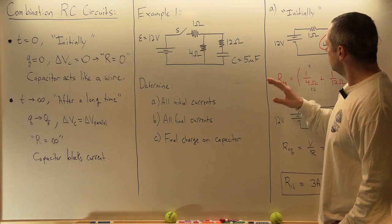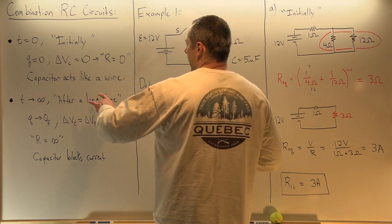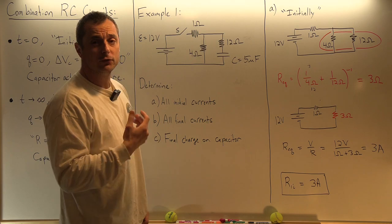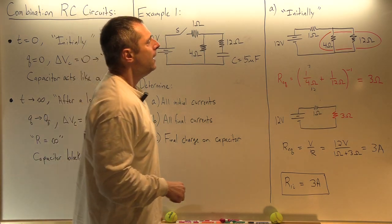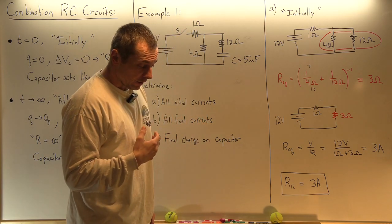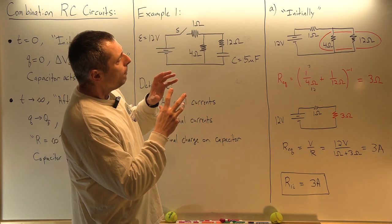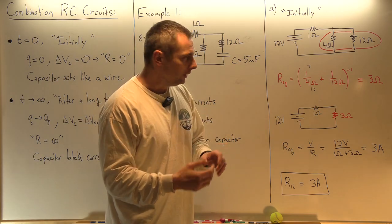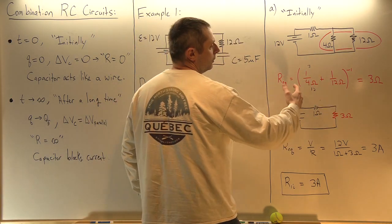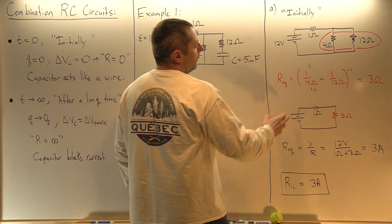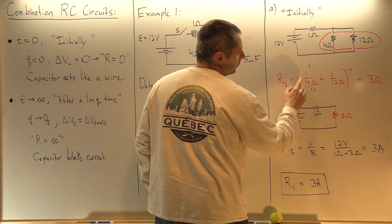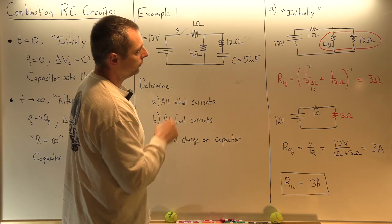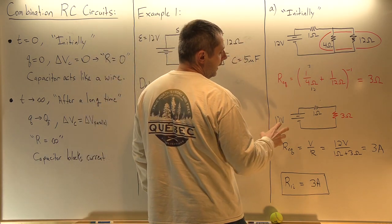The first thing we do is redraw the circuit. In the beginning, the capacitor acts like a wire. So we do a simple combination circuit analysis to see what part of the circuit is in series or parallel. We start with the 4 and 12-ohm resistors — they are in parallel. Using the parallel resistor rule: 1/4 + 1/12 gives a common denominator of 3/12 + 1/12 = 4/12, flipped over is 12/4, which gives us 3 ohms.